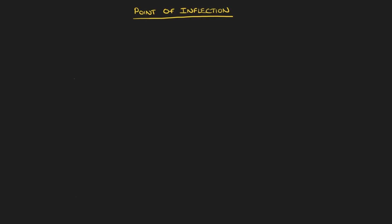Let's get to it. Given some curve y equals f, a point of inflection is a point at which the curve changes concavity. Looking at this portion of a curve, we can see as we go from left to right that the curve is initially concave up, and as we carry on, it turns into a concave down curve. Somewhere along here there's a point at which that concavity changes — that's a point of inflection.